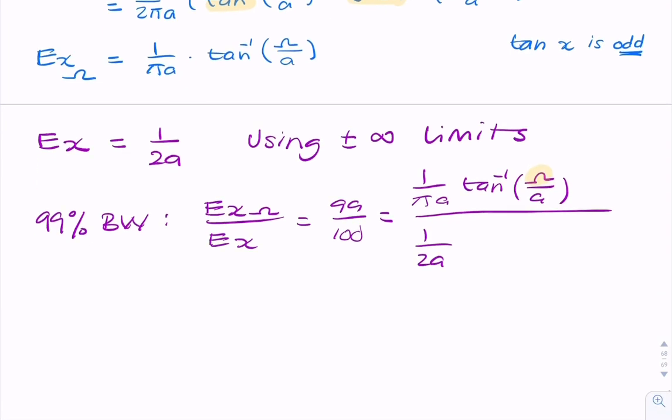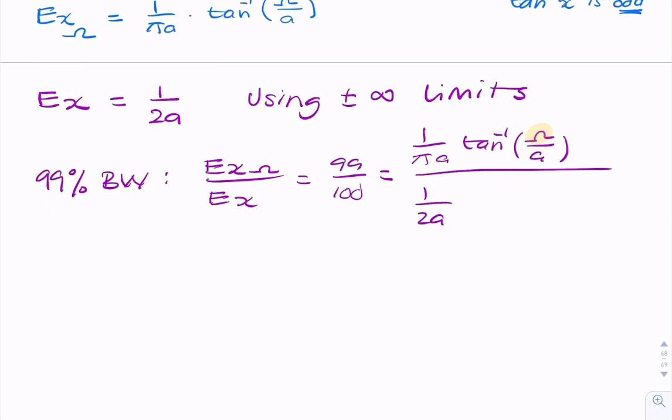So I can rearrange and say 0.99 equals... The a will cancel with the a. So we'll have 2 over pi tan inverse (omega over a). So this is the equation you'd need to solve to find the 99% containment bandwidth.